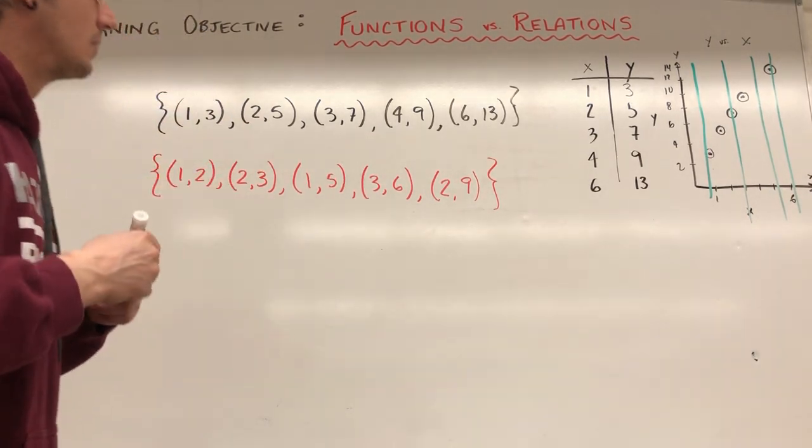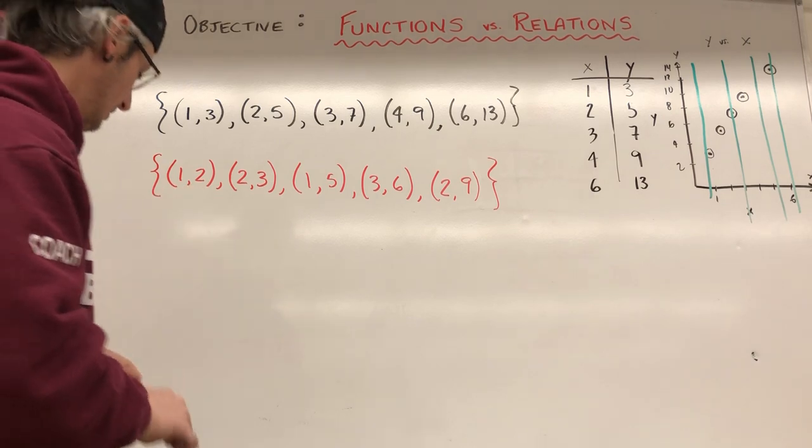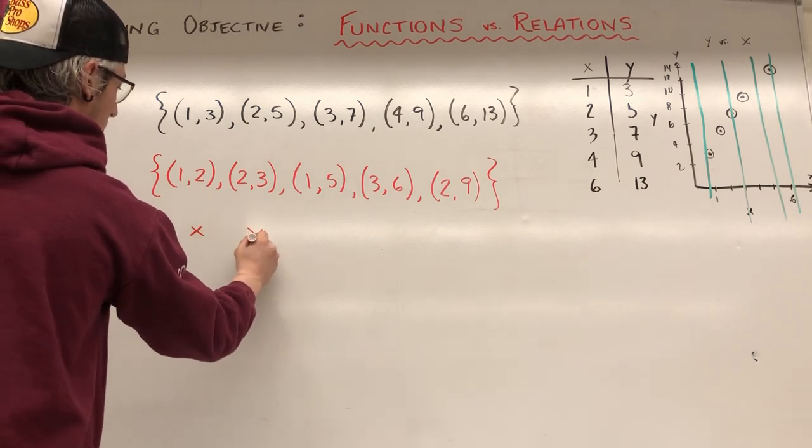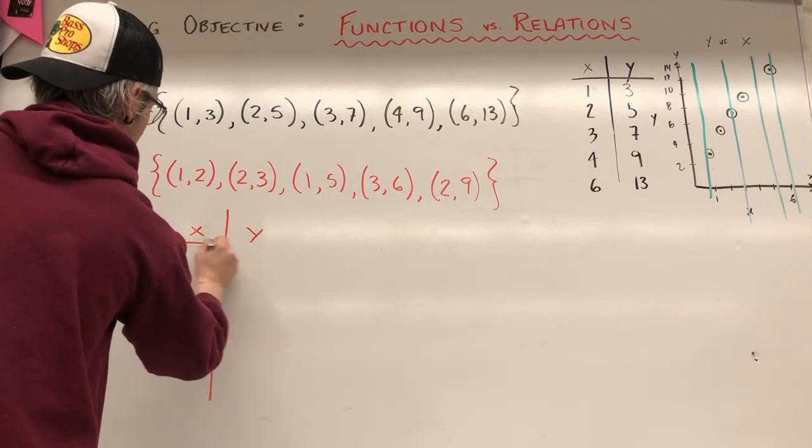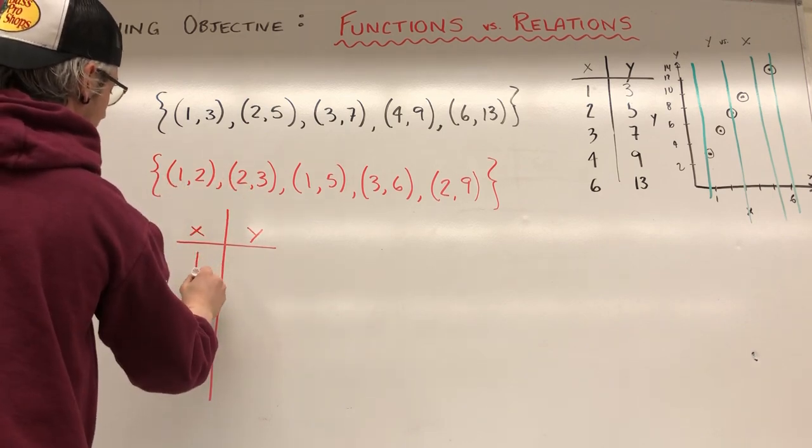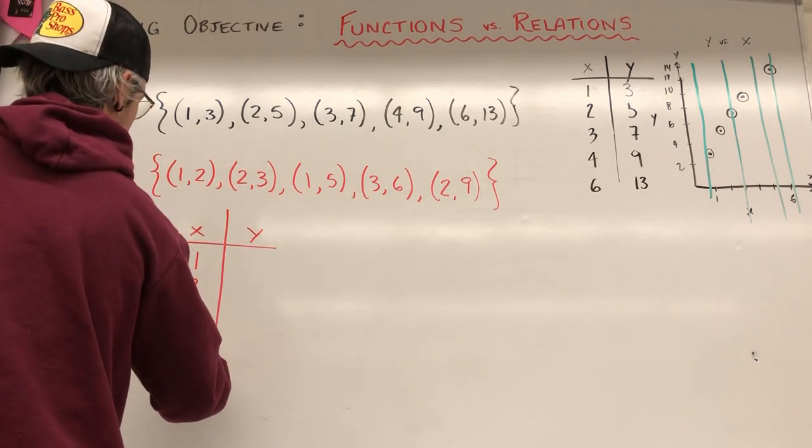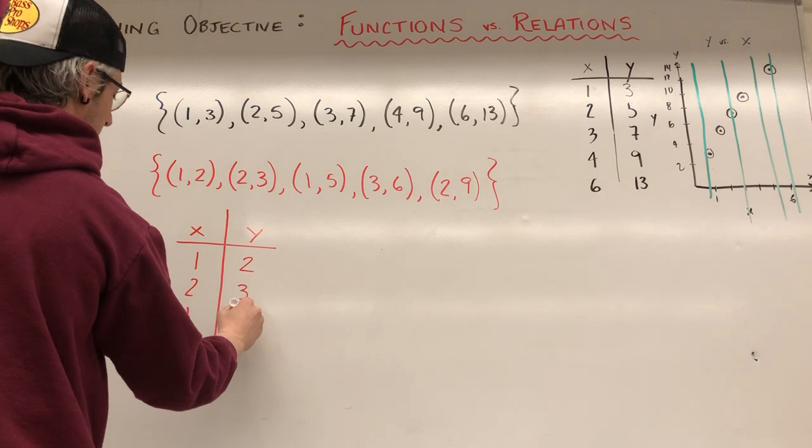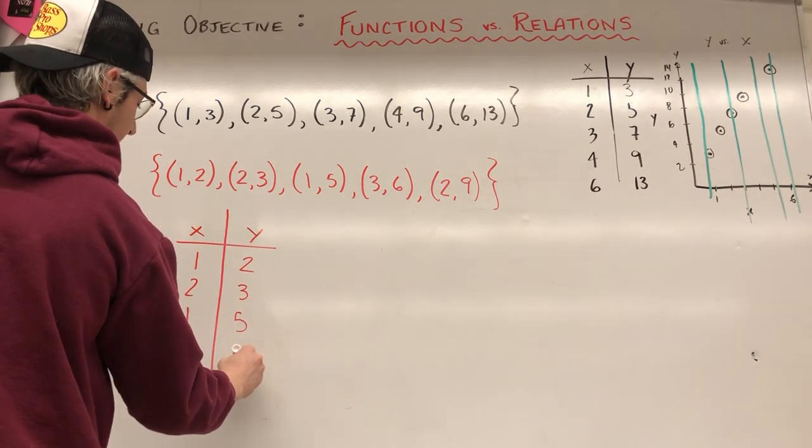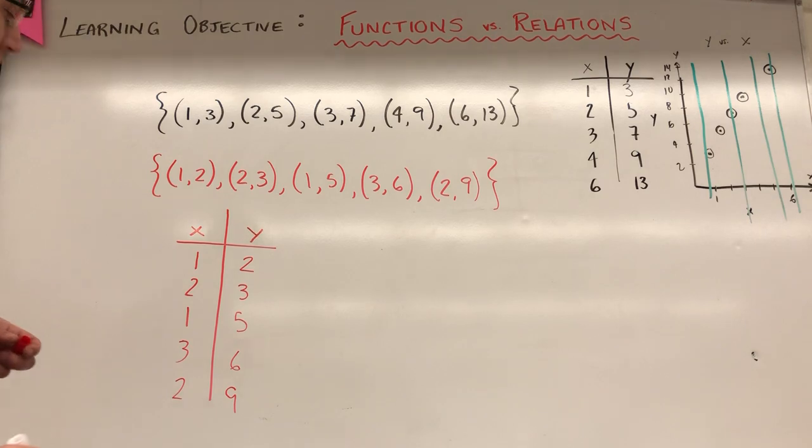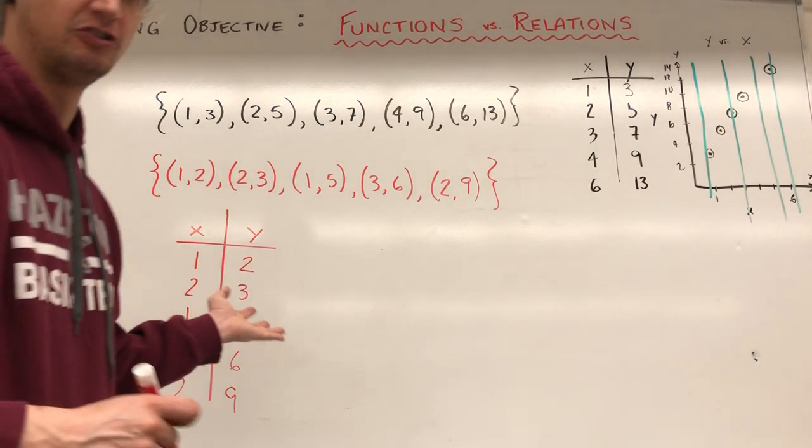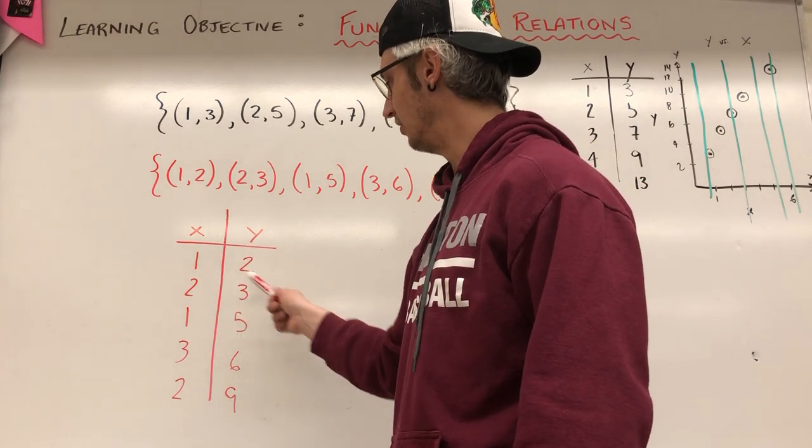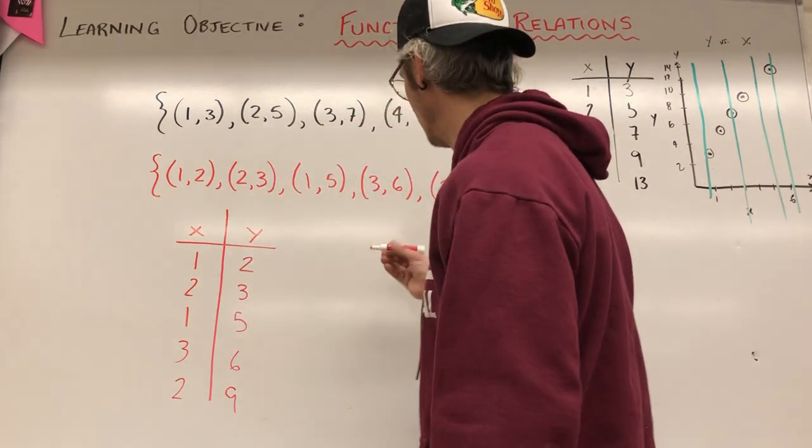And all the vertical line test says is, is there any point along my graph where a vertical line crosses more than one point? And in this case, you can draw all the vertical lines you want, and no vertical line is ever going to intersect more than one data point. So that's an extra little test you can do for functions or relations. Let's do this one now. Let's check this bad boy here. So let's create another table of values, X, Y. X: 1, 2, 1, 3, 2. And my outputs are 2, 3, 5, 6, 9. Now you should already be kind of being like, Hey, okay, this is clearly a relation non-function because I got an output of 2 for 1, but I also have an output of 5 for 1. And I have an output of 3 for 2, but also 9.